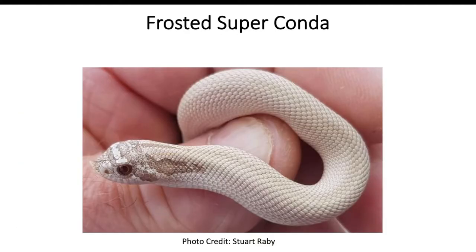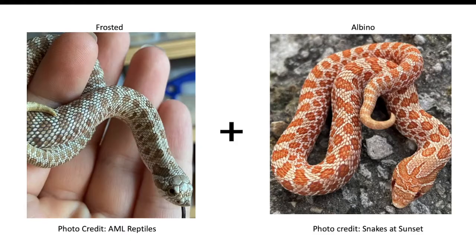This is what a frosted superconda looks like — the frosted snake with a completely reduced pattern. Now let's start looking at some more combinations.